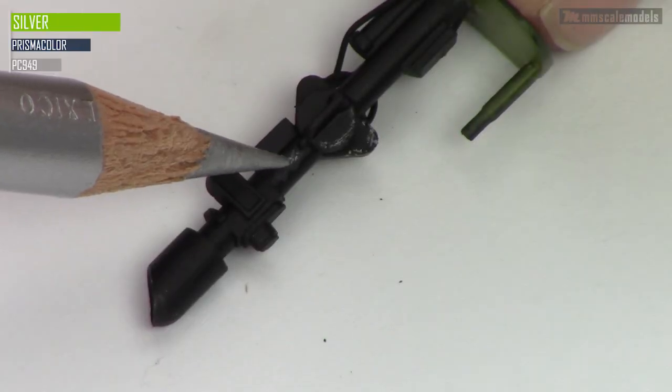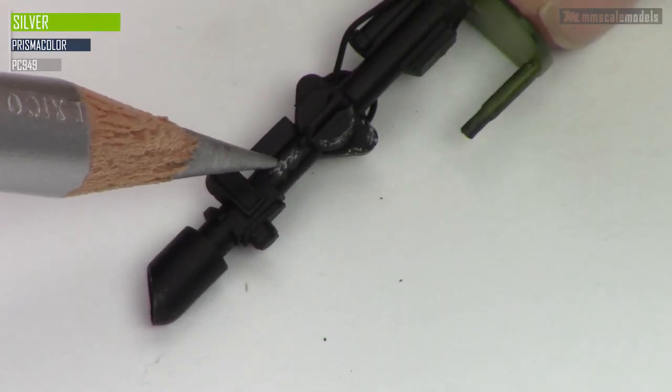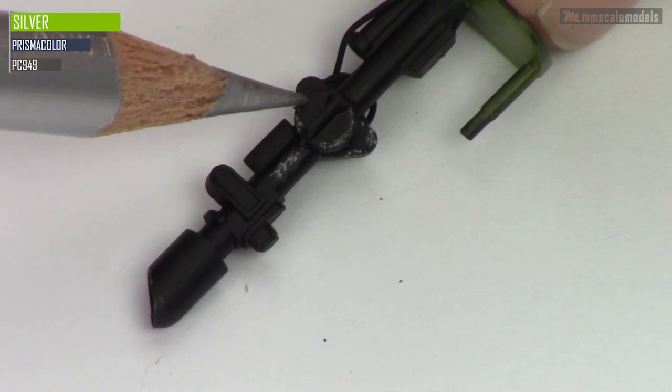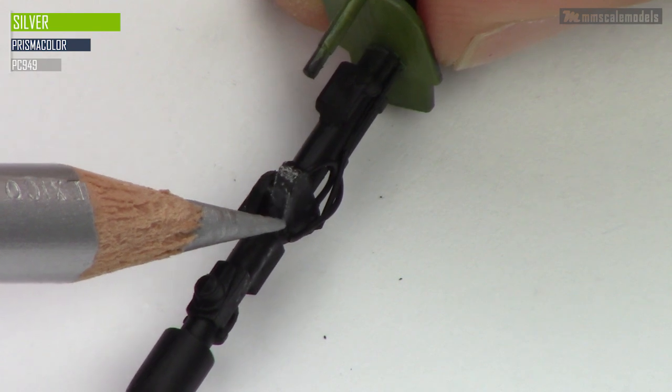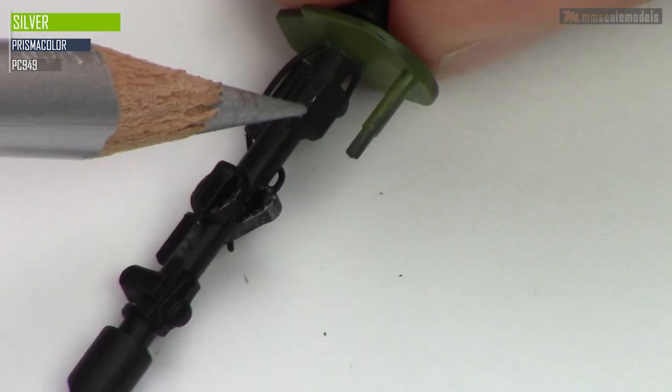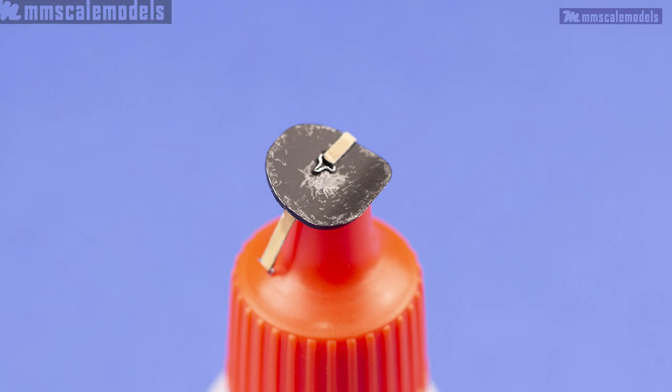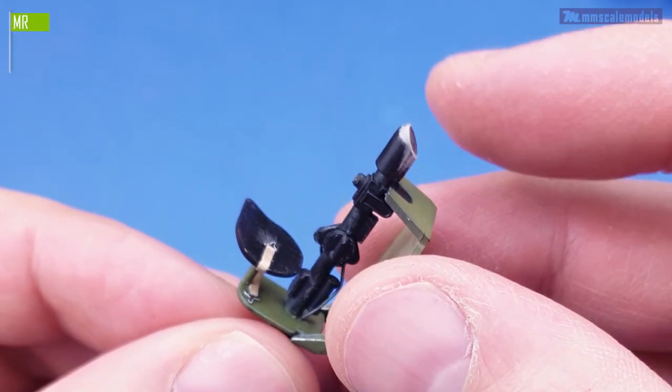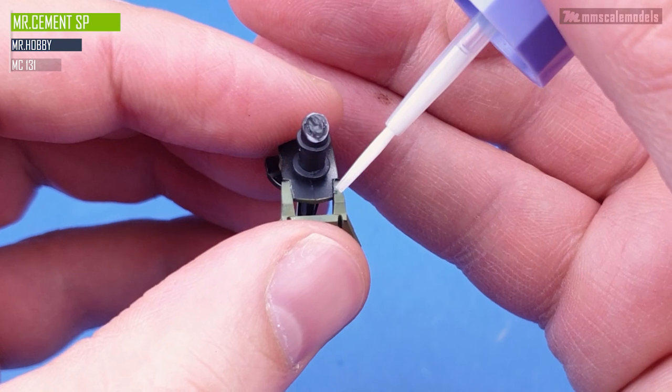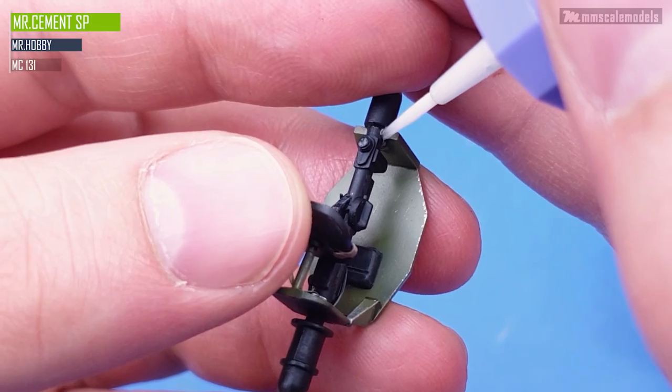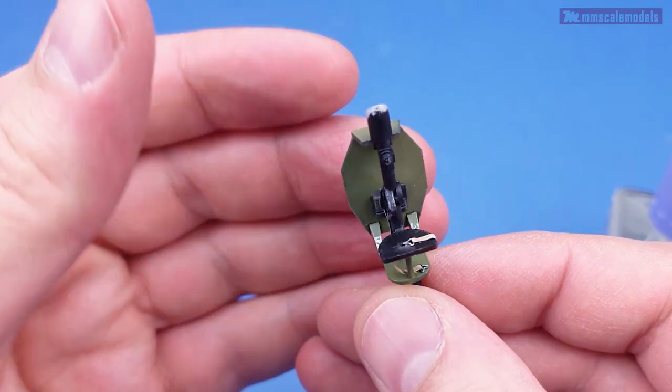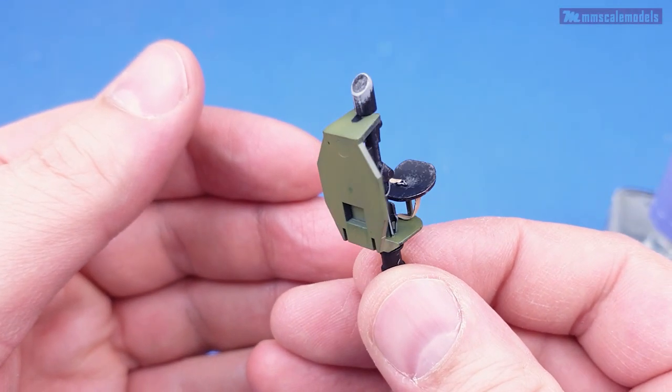I painted the aiming station in the same manner that I did with the interior. Link to that video you can find in the description. After that I did some bare metal chipping using a silver watercolor pencil. Finally after I attached the seat belts to the seat and the seat to the aiming station I glued the armor plate and the aiming station together. This sub assembly however will go in its place a little bit later in the build.